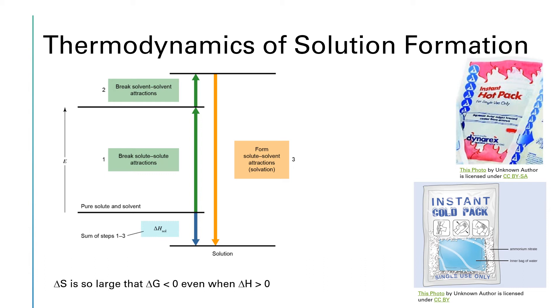So to try to make arguments about the delta H of forming a solution, we draw energy level diagrams like this. So we're starting with the pure solute and solvent at this energy level. And now we imagine a process in which we break apart all of the solute particles. And that takes energy because we have to overcome their intermolecular forces. So we rise up to this level.